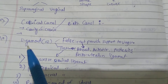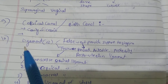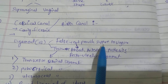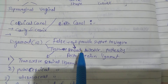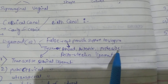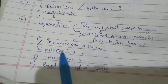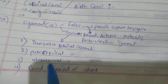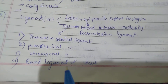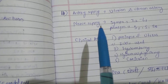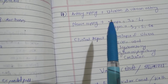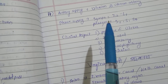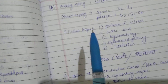Ligaments of the uterus are two in number: false ligaments and true ligaments. False ligaments do not provide support. They include the broad ligament, anterior ligament, posterior ligament, and recto-uterine ligament. True ligaments include the transverse cervical ligament, pubocervical ligament, utero-sacral ligament, and round ligament of the uterus. Arterial supply: uterine artery. Nerve supply: sympathetic T12 to L1, parasympathetic S2, S3, and S4.